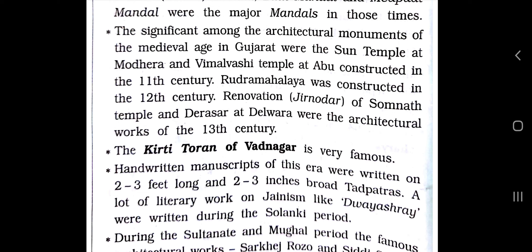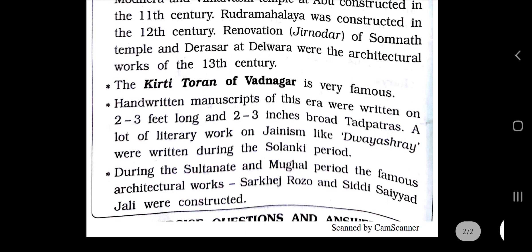Handwritten manuscripts of this era were written on two to three feet long and two to three inches broad Tad Patras (palm leaves). A lot of literary works on Jainism, like Dvyashrayi, were written during the Solanki period. During the Sultanate and Mughal period, the famous architectural works of Sarkhej Roza and Sidi Saiyyed Jali were constructed.